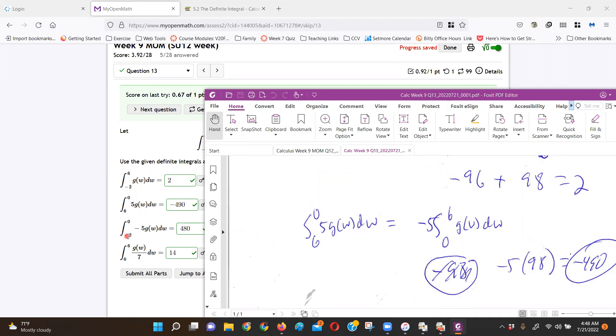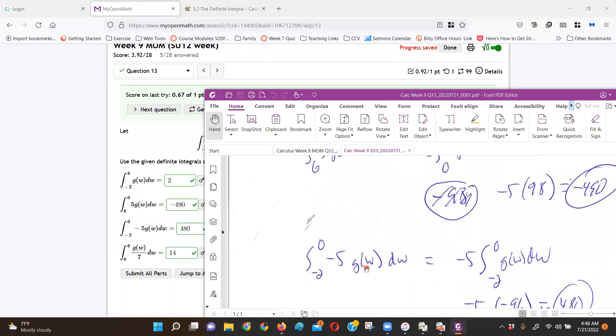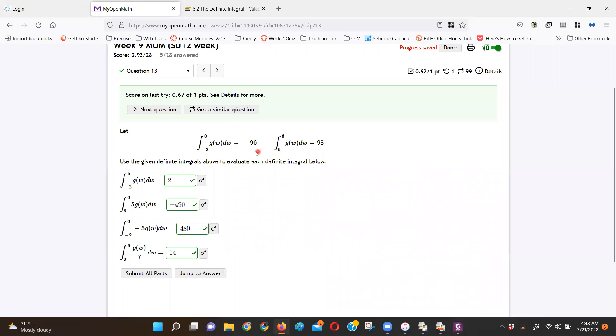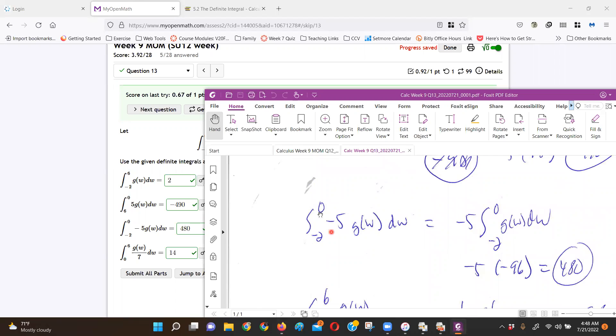Okay? Now, the next one, see how it's kind of like the same question, except here I'm going from negative 2 to 0. So I'm using, where am I? I'm going from negative 2 to 0. So I'm just using that negative 96, right? So I brought the negative 5 out. I didn't have to reverse anything. I got the negative 96 times negative 5, got positive 480.